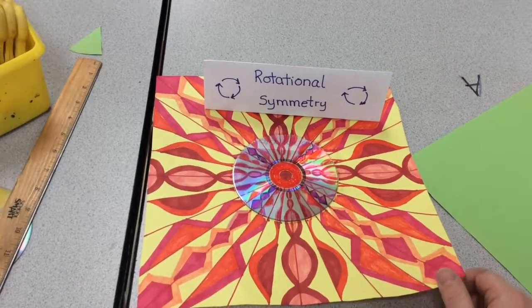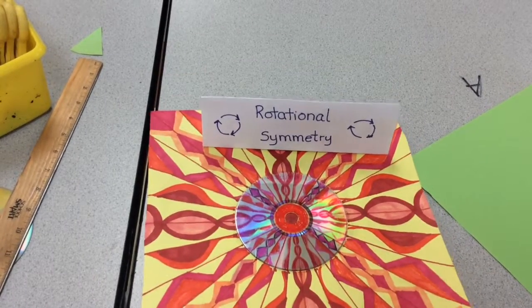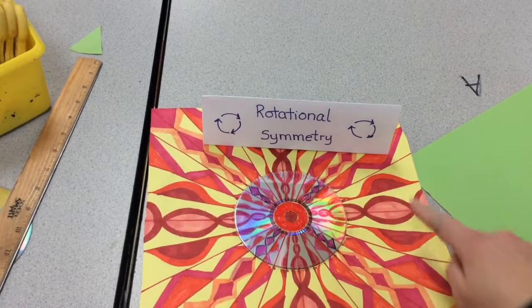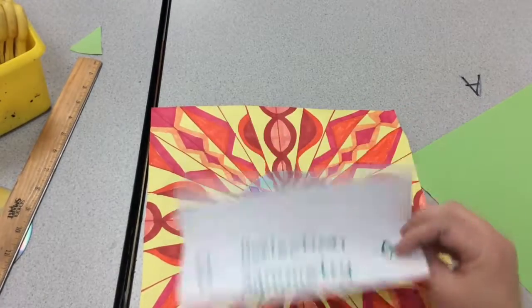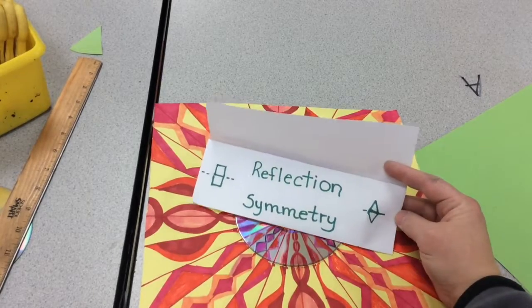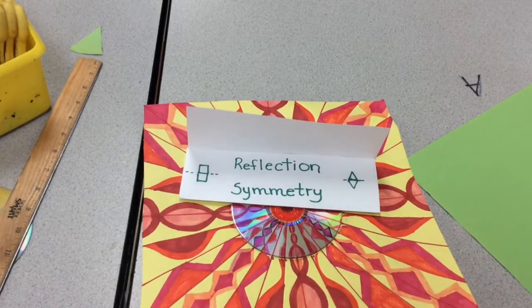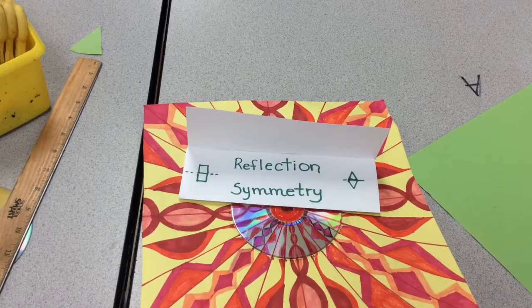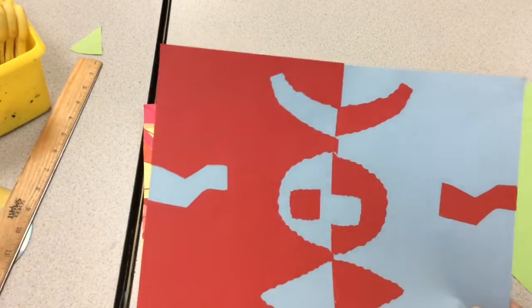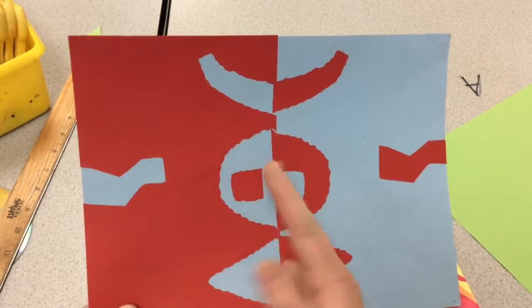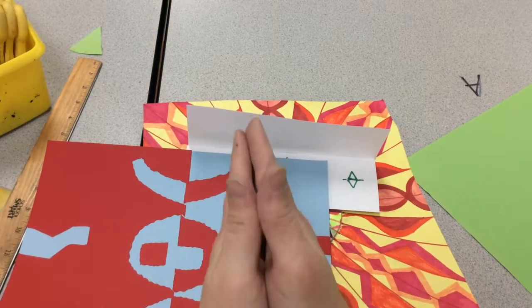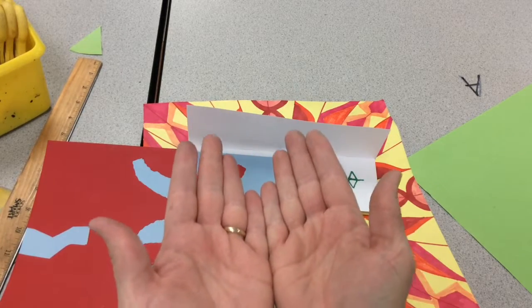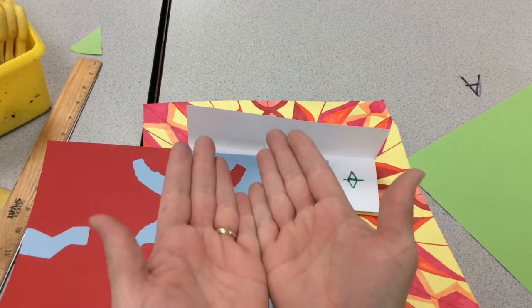Today we're doing our rotational symmetry projects. Again, rotational symmetry means it goes around and rotates. We're also going to use reflection symmetry. Another way we think of symmetry is if you put your hands together and you open them up, that's reflection symmetry.